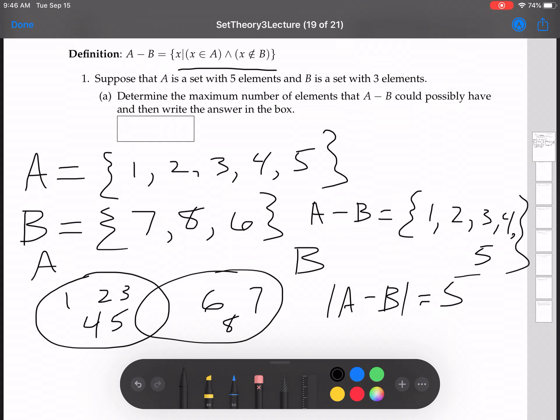And now we got 5. That's the biggest it could possibly be, right? Because A only has five elements, right? So this set, containing all the things that are in A and not in B - to satisfy this first condition x is in A, it can only be one of five elements. So the answer is 5.